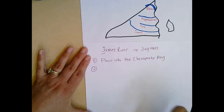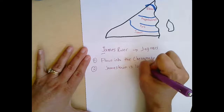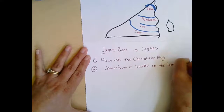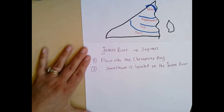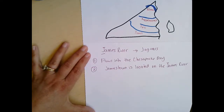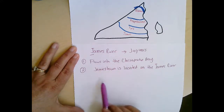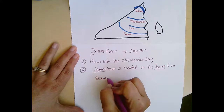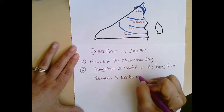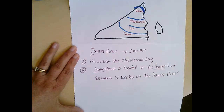One of the major cities on the James River is a very cool place called Jamestown. Jamestown is located on the James River. Usually we get to take a field trip to Jamestown, but this year that is not going to be an option. If your parents ever have a chance to take you there, it is a very cool place to visit. The second major city is Richmond. Richmond and Jamestown are both located along the James River.